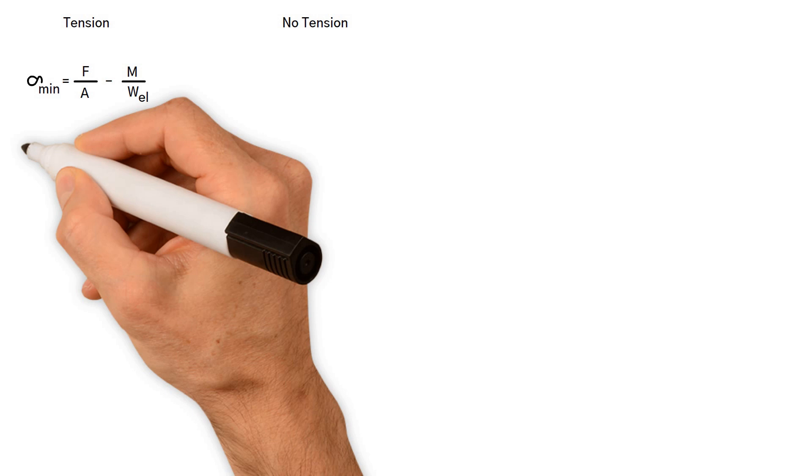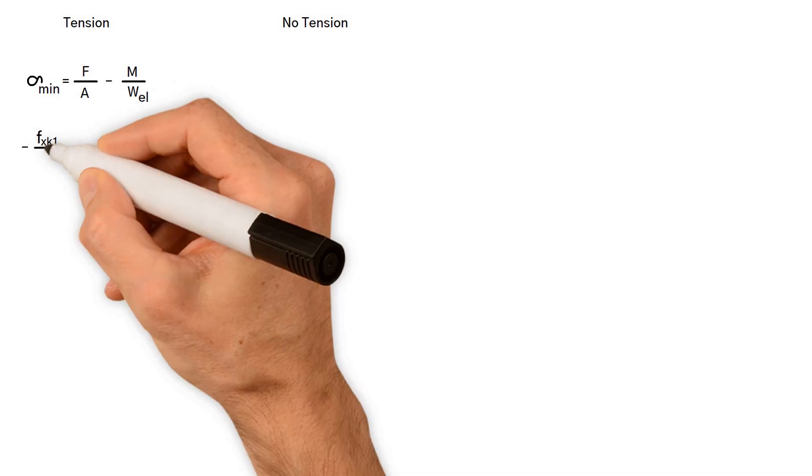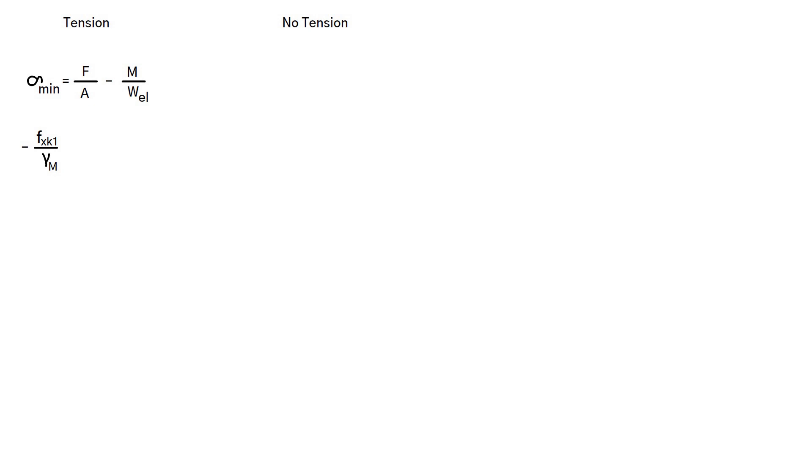Case 1: tension case. Where the use of a characteristic tensile bending stress is appropriate, we can use the following equation to derive an expression for the maximum design bending moment that a wall can support. Because some tension is allowed, the value of minimum stress is allowed to become negative, but must not exceed tensile bending strength divided by partial safety factor. Therefore, at the limiting case, by rearranging the equation, we get the maximum bending moment, where F is the design axial load in the wall.